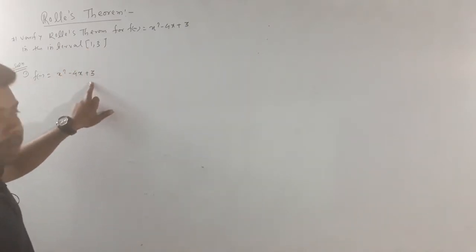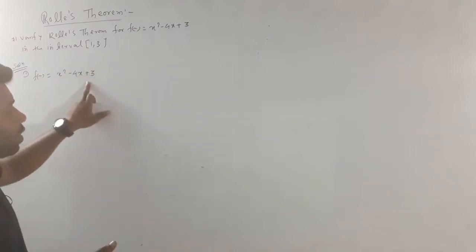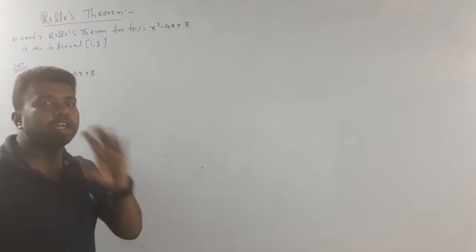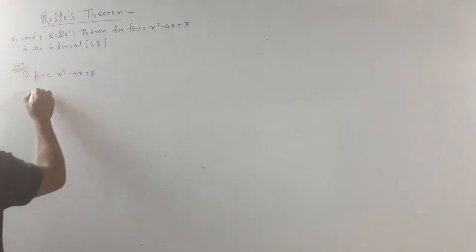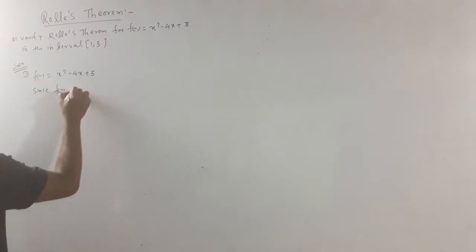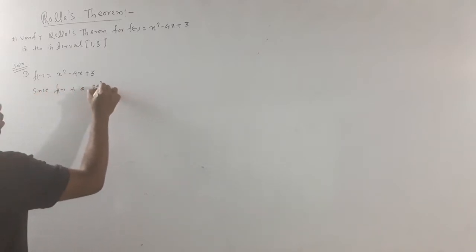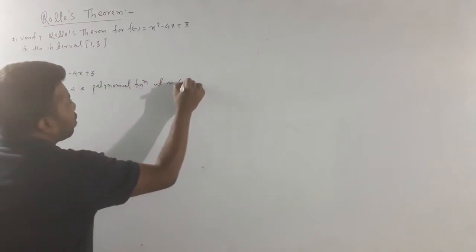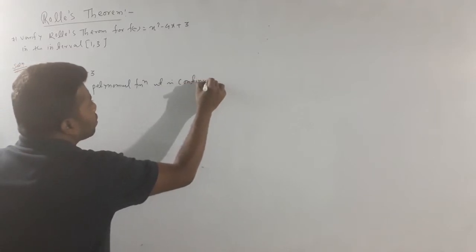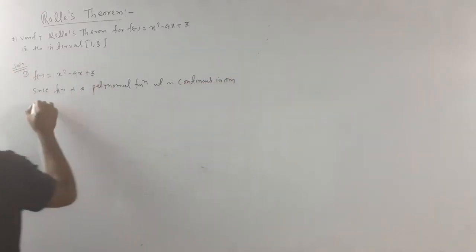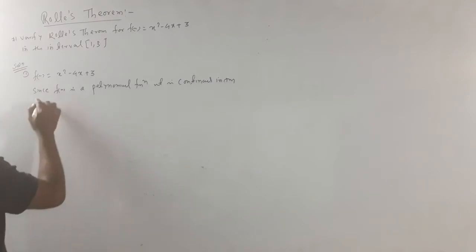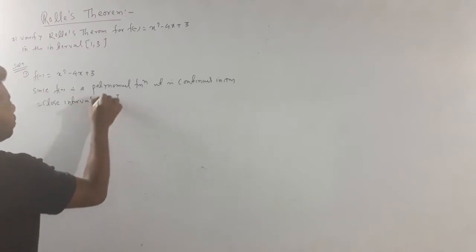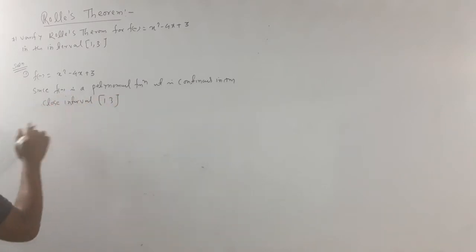Step 1: continuity check. If we put 1 and 3 and the answer is not infinite, then the function is continuous. Since f of x is a polynomial function, it is continuous on the closed interval [1, 3]. Step 1 complete.